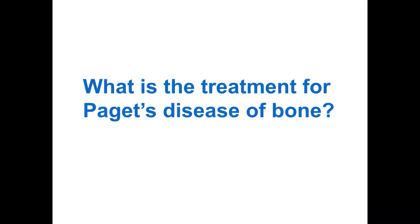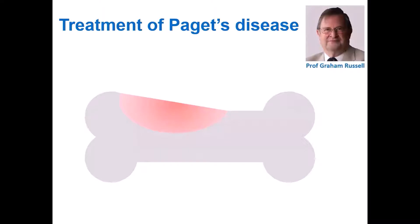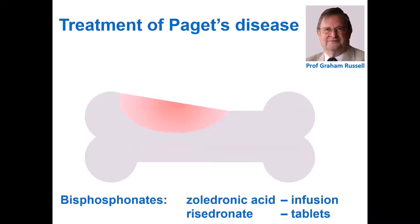So what is the treatment for Paget's disease? Thanks to the pioneering work of Professor Graham Russell and his colleagues about 50 years ago, we now have fantastic drugs to treat Paget's disease. These are known as bisphosphonates, and the gold standard is zoledronic acid, which is given in an infusion. Risedronate, given in tablets, can also be used in patients who can't receive zoledronic acid.